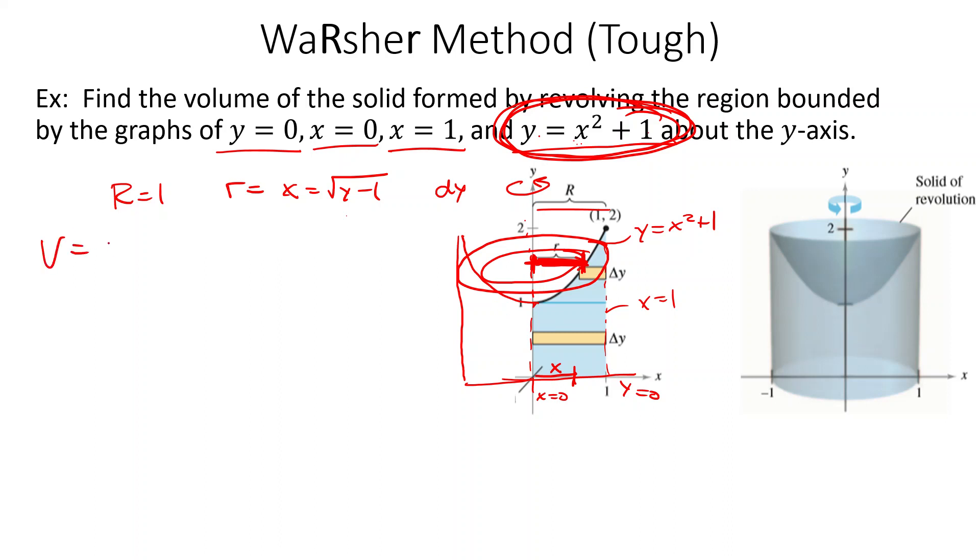So we get that our volume is pi. All right. So now we get, it's best to break this into two. The top one and the bottom one. The top one is we're going from 1 to 2 along the y-axis with our outer radius as 1, so 1 squared. Our inner radius is this guy, square root of y minus 1 squared dy, plus this volume of the bottom half.